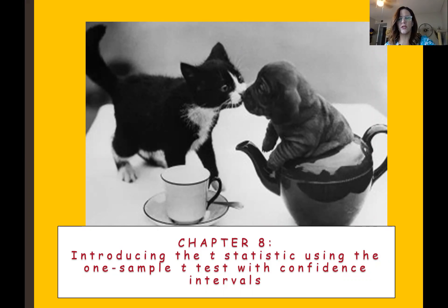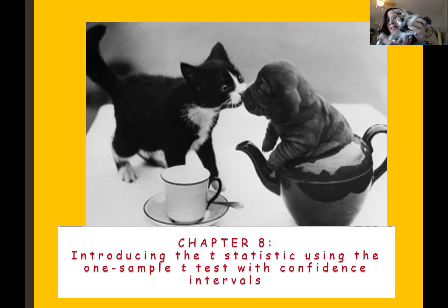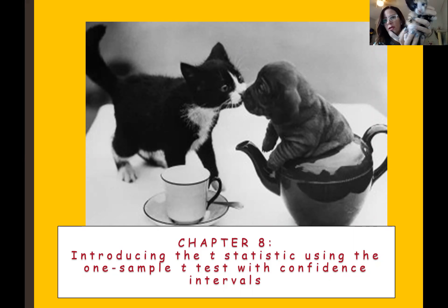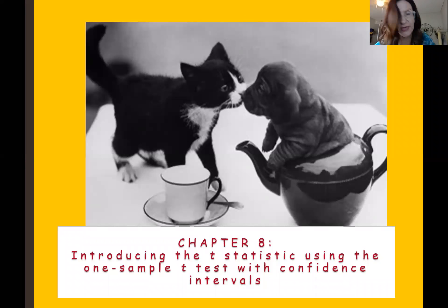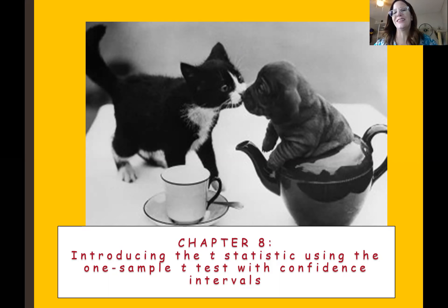Hi guys. We're going to start talking about T tests now that we are in Module 3. To remind you of T tests, I thought I would share something that could potentially fit into a teacup. This is Little Rodeo, an orphan from New Mexico. That's her temporary name. She's going to a foster home, so if you hear a little noise you'll understand why, because she is very needy right now. So let's move into Chapter 8 with a one-sample T test.